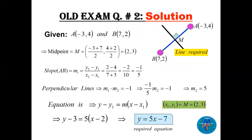Here's a little sketch. We have points A(−3, 4) and B(7, 2). Find the midpoint using (x1+x2)/2 and (y1+y2)/2. So (7 + (−3))/2 = 2, and (4+2)/2 = 3. The midpoint M is (2, 3). The required line — the black one — passes through this midpoint and is perpendicular to AB.